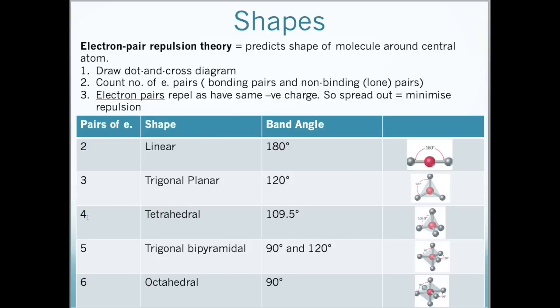Four pairs of electrons, the shape will be tetrahedral and the bond angle as shown here in methane will be 109.5 degrees.